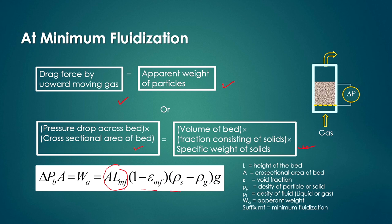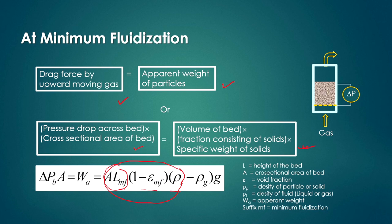The apparent weight equals A·L_mf·(1 − ε_mf)·ρ_s minus the buoyancy term A·L_mf·(1 − ε_mf)·ρ_g·g. This gives the net downward force on the solid particles, while the drag force acts upward and equals ΔP_b × A. So the drag force equals the apparent weight of the particles, and from this equation we can calculate the minimum fluidization velocity. Here L is the height of the bed, A is the cross-sectional area, ε is void fraction, ρ_p is solid density, ρ_f is fluid density (liquid or gas), and suffix MF represents minimum fluidization.